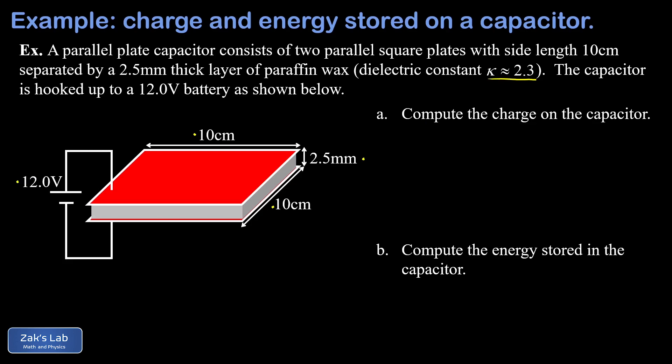So in part a, we want to get the charge on the capacitor. If I go back to the definition of capacitance, that's the charge per volt. So C is Q over V. So if we want to get the charge on the capacitor, that's CV. Well, we still have to find the capacitance C, and that comes from the geometry of the capacitor and the dielectric constant of that layer between the plates.